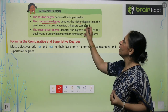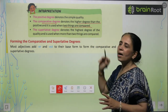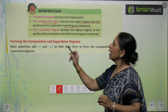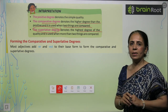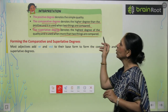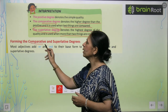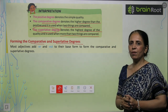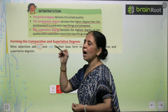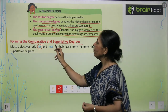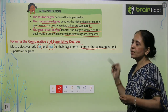The comparative degree is used when two things are compared, and the superlative degree is the highest degree of quality — used when more than two things are compared. To form comparative and superlative degrees from the positive, we either add ER or EST to the base form. For example, the base adjective 'tall' becomes 'taller' in comparative and 'tallest' in superlative.